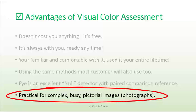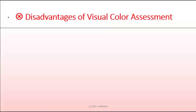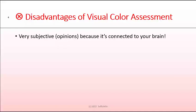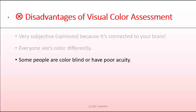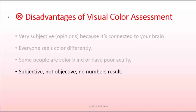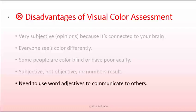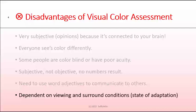With spot colors you obviously measure a solid, but with photographs made out of halftone screen dots, where do you measure? There are always advantages and disadvantages, pros and cons, strengths and weaknesses. The first disadvantage is it's very subjective — it's an opinion because it's connected to your brain, and once you get your brain involved, there are all types of psychological effects occurring. Everyone sees color differently. Some people are color blind or have poor color acuity. It's not objective, so no numbers result. You need word adjectives to communicate to other people what you're seeing. And vision is dependent on the viewing and surround conditions, and your state of adaptation.